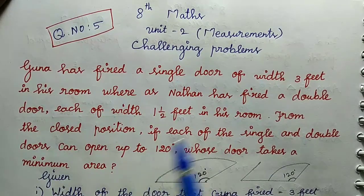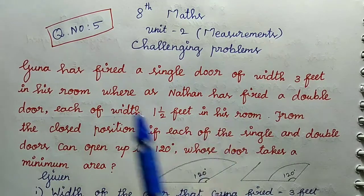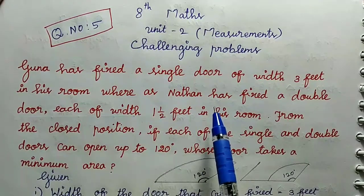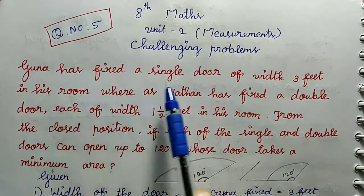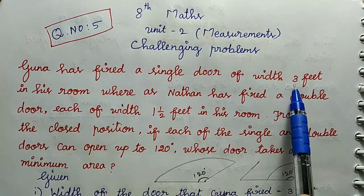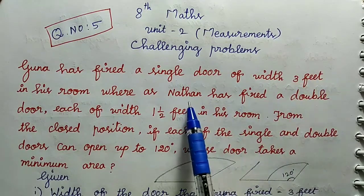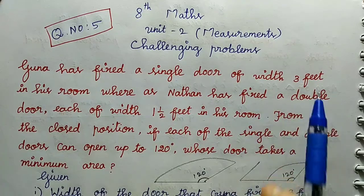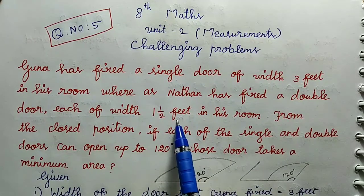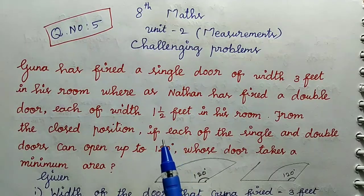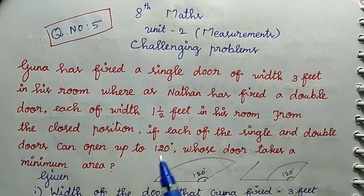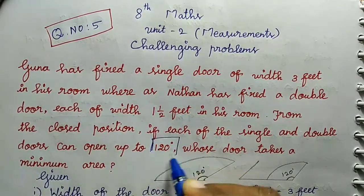So in this question, Guna has fixed a single door of width 3 feet. Nathan has fixed a double door, overall 3 feet total — each panel is 1 and 1/2 feet. The door forms a 120 degree angle when opened from the closed position.